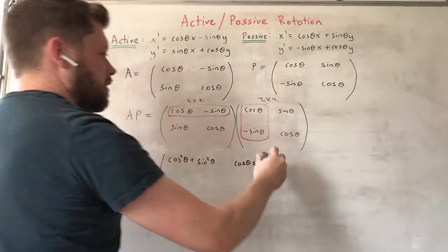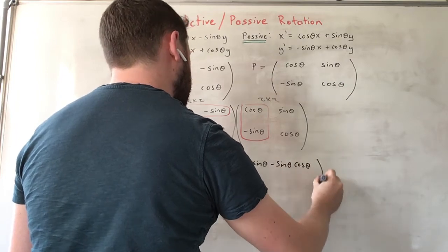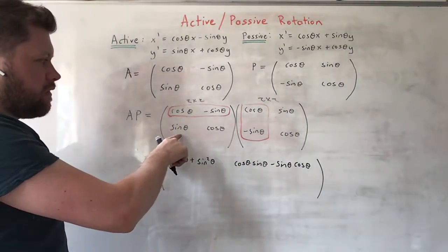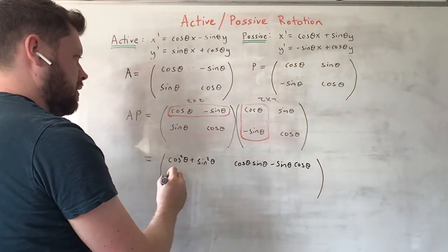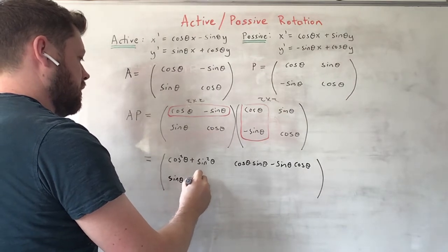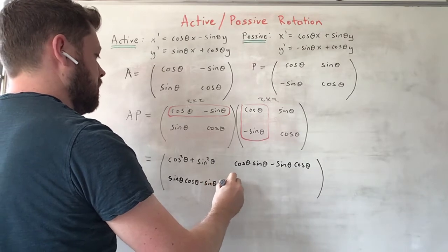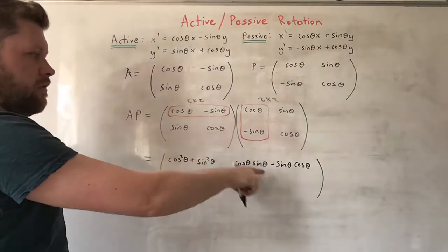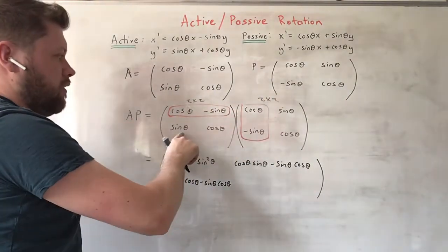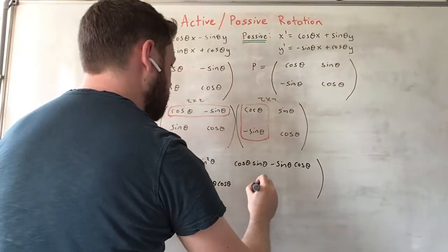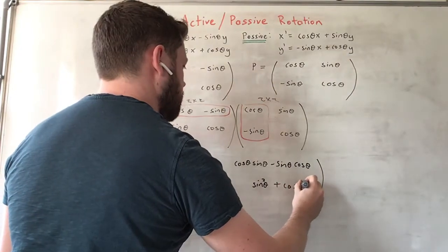The third element comes from the second row times the first column: sine θ times cosine θ minus sine θ times cosine θ. The fourth element comes from the second row times the second column: sine θ times sine θ is sine squared θ plus cosine squared θ.